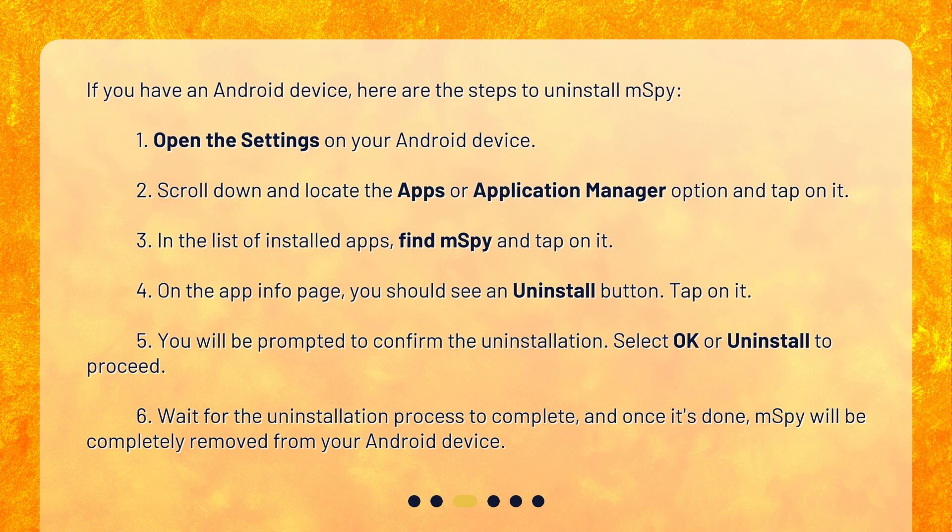Step 5: You will be prompted to confirm the uninstallation. Select OK or Uninstall to proceed. Step 6: Wait for the uninstallation process to complete, and once it's done, MSPY will be completely removed from your Android device.